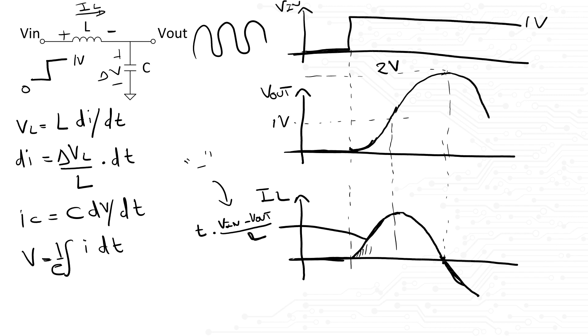In a similar way, once Vout is equal to the input voltage of 1 volt, the current through the inductor will stop decreasing since the delta V across the inductor is once again zero. And the cycle repeats itself.